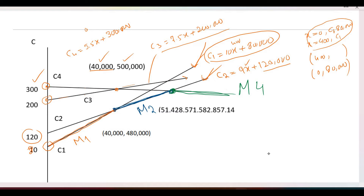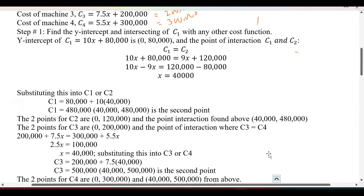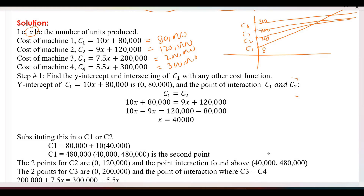Now check where the lines intersect. Machine 1's line starts at its y-intercept and then intersects with C2. To find the intersection point, we set C1 equal to C2 and solve — this gives us the value of x. Substituting that x back into C1 or C2 gives us the y-value of the intersection point. That is how we find the intersecting point of C1 and C2.